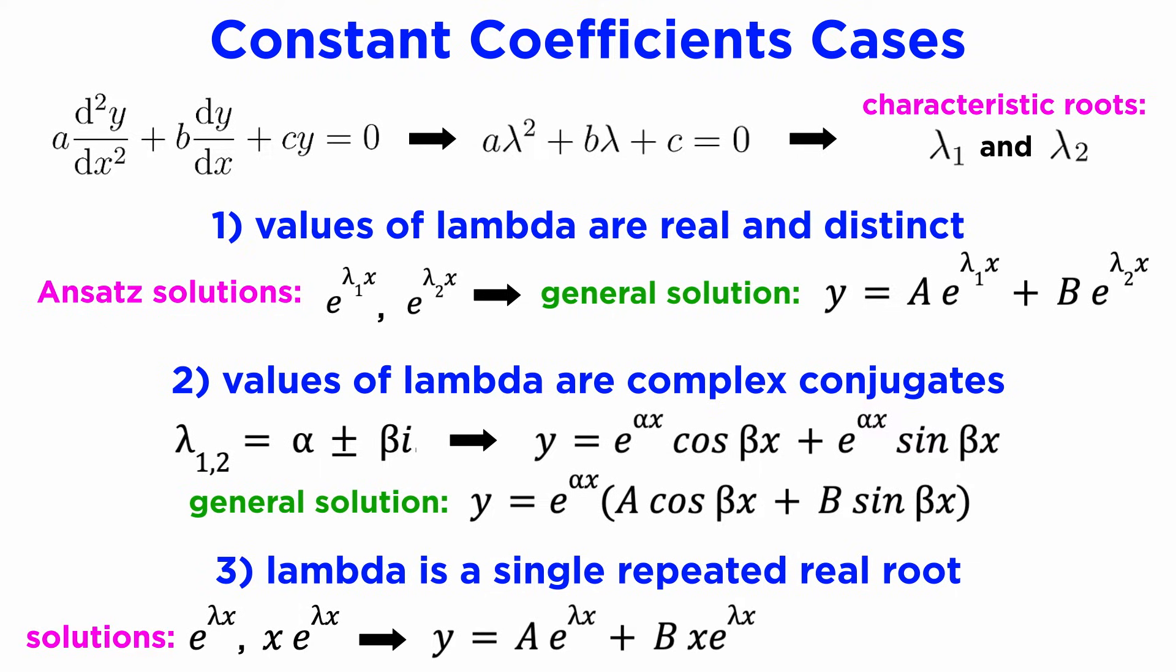So for this repeated roots case, the general solution will be A times e to the lambda x plus B times x times e to the lambda x, and we can factor out the exponential to get this neat form shown here: e to the lambda x times the quantity A plus Bx.